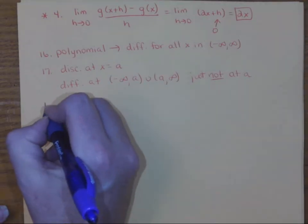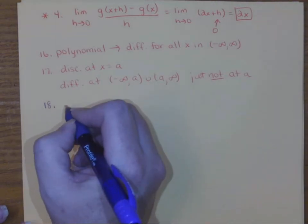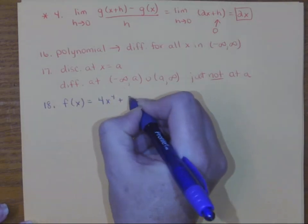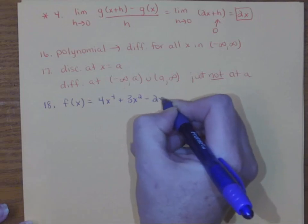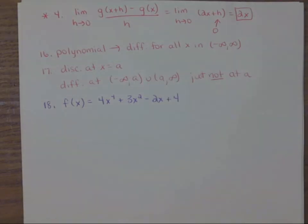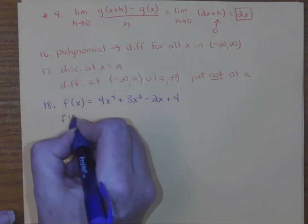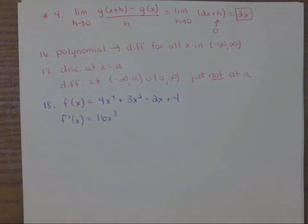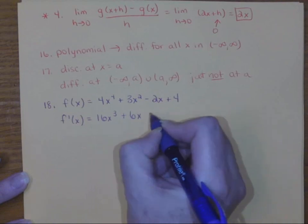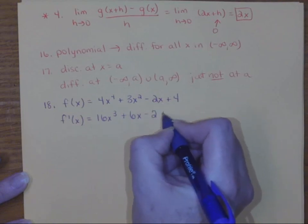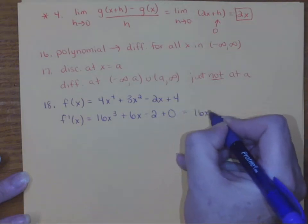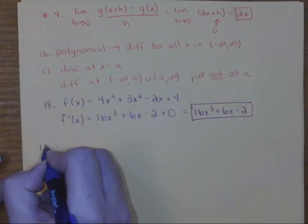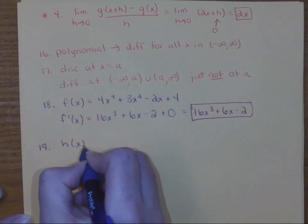All right, let's look at the last half of the review. For 18 through 29, you're just going to find the derivatives using the shortcut methods — not the long method we used for 14 and 15. Notice we can just use power rules here, so if we move the powers out to the front we'll get 16x cubed, then 6x, then minus 2. The derivative of a constant by itself is just zero, so in the end we just have 16x cubed plus 6x minus 2.